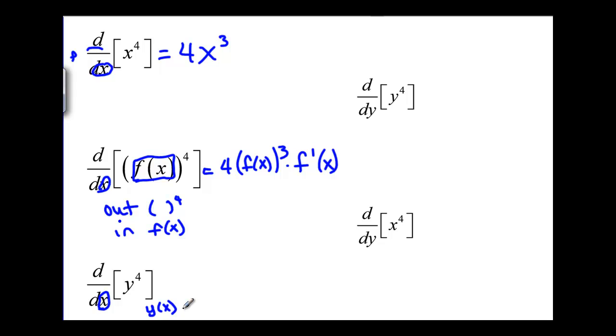If that's the case, then this derivative is going to be just like this one up here. We're going to use the chain rule with the outside function being the fourth power again and the inside function being y in terms of x. We're going to get 4y cubed times the derivative of y in terms of x.